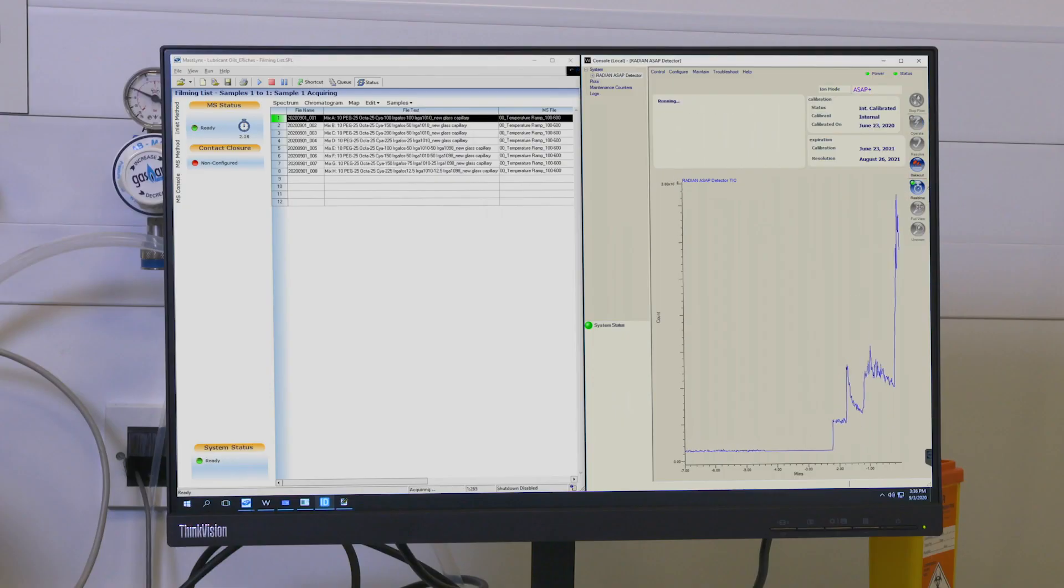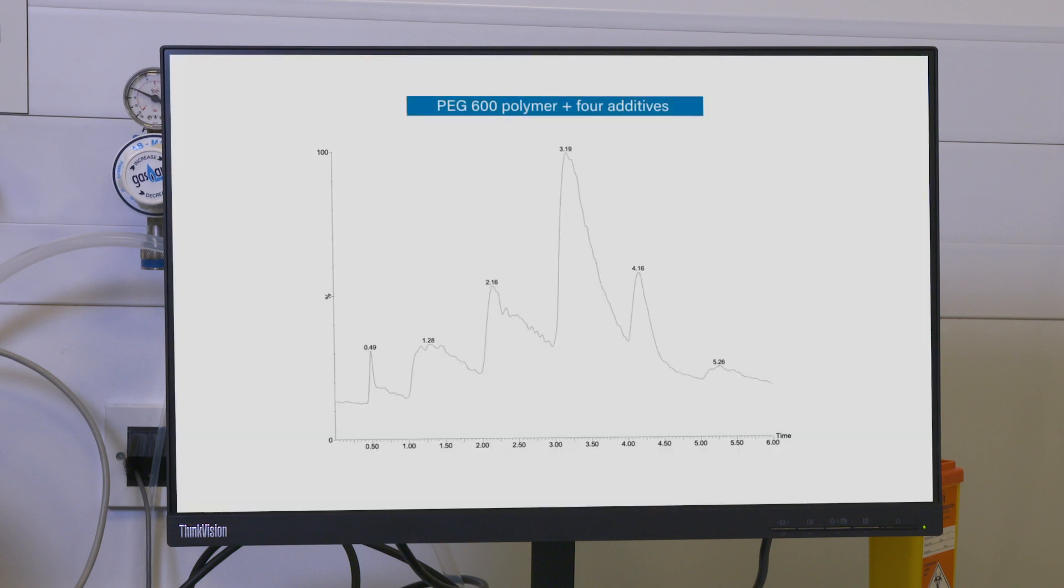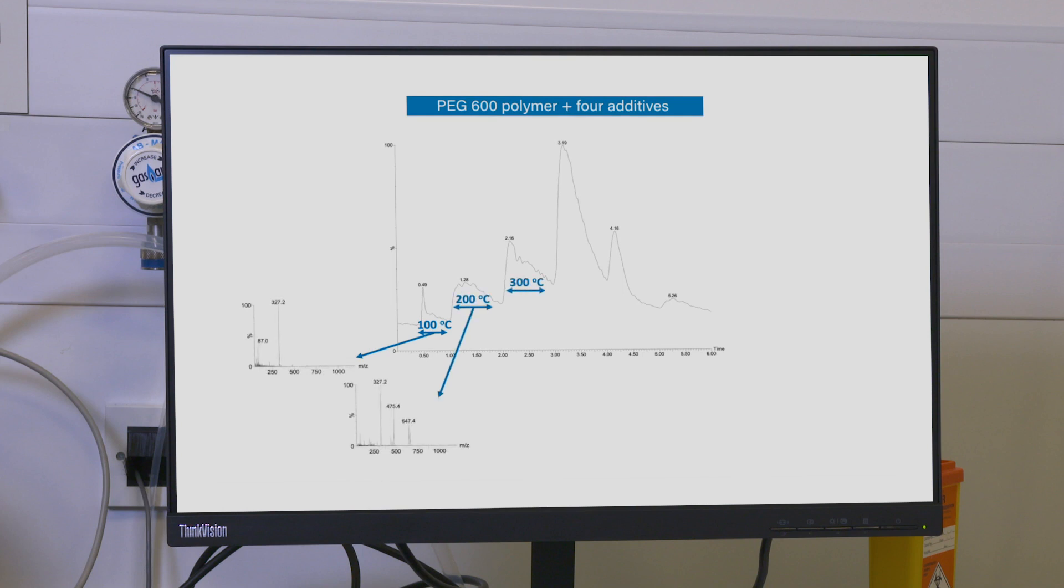Here is the resulting thermal profile from the pre-programmed temperature ramp. We can see the different spectra evolve at different temperatures. Key components appear as each boiling point is reached in the thermal gradient.